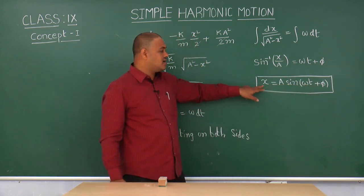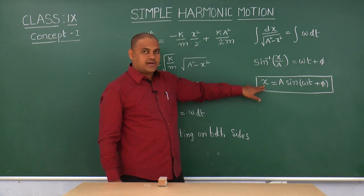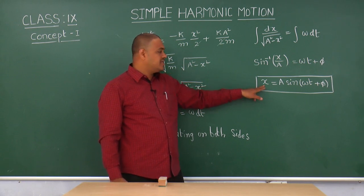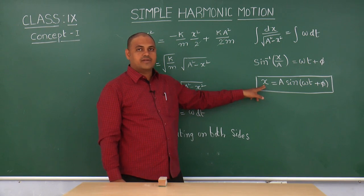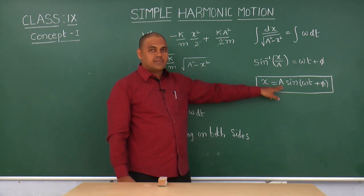This equation is called the displacement of a particle which executes simple harmonic motion. In this, x means the instantaneous displacement of the particle from its mean position. A means the maximum displacement of the particle.